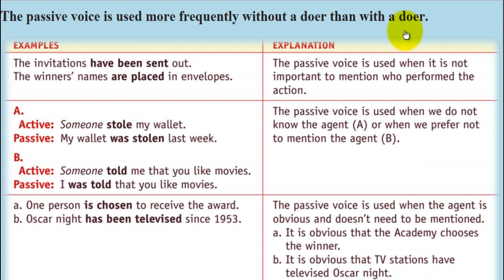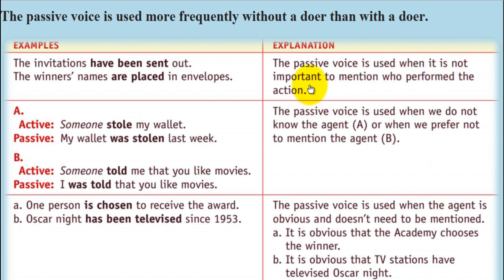Examples: 'The invitations have been sent out.' 'The winner's names are placed in envelopes.' The passive voice is used when it is not important to mention who performed the action.